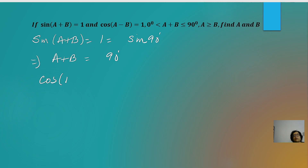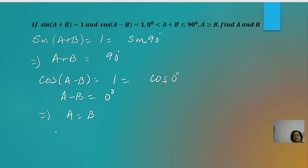The second condition given is cos(A−B) = 1, which equals cos 0°, so A−B = 0°, meaning A = B. Since both angles are equal and A+B = 90°, substituting gives 2A = 90°, so A = 45° and B = 45°. Both conditions are justified: A equals B and their sum is 90°.